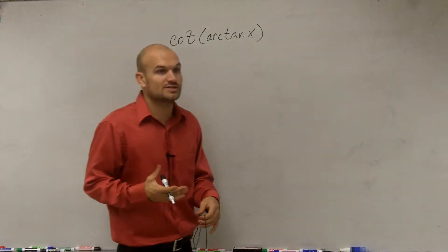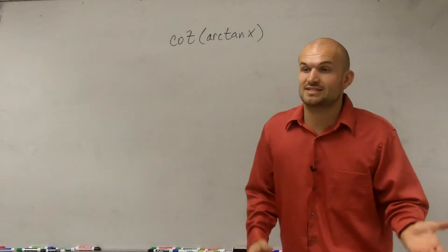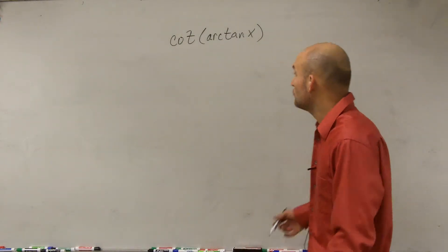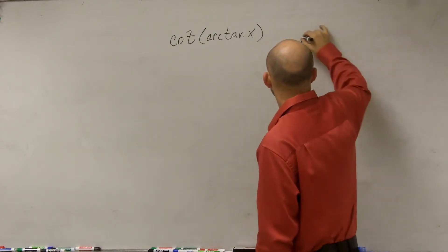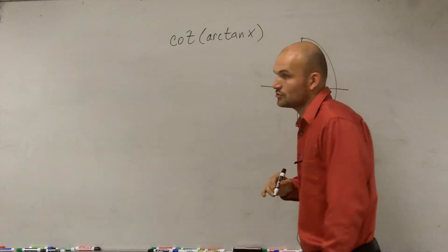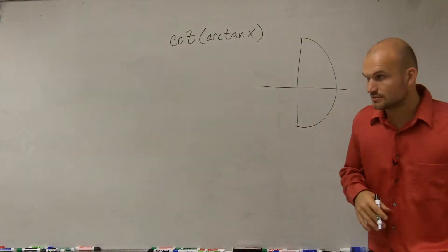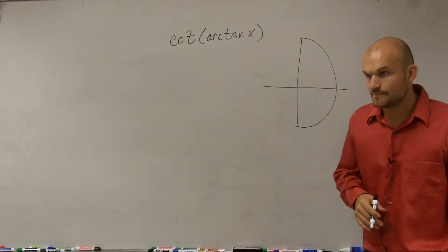So the first thing we need to do is understand where, if we're going to be taking the arctangent of x, we're going to create a triangle. Remember, the tangent has to be either in my first or my fourth quadrant. Correct? Yes. All right? OK.